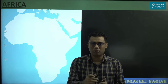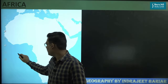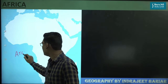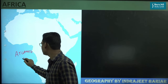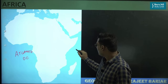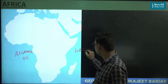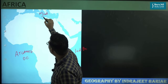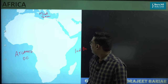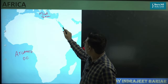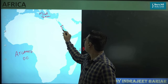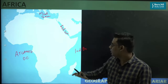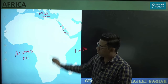First, we see the water bodies which surround this continent. Towards the west, this continent has the Atlantic Ocean; towards the east we have the Indian Ocean; and towards the north we have the Mediterranean Sea. Interestingly, there is a water body called the Red Sea towards the northeast, and this Red Sea was formed due to a fracture in the landmass.